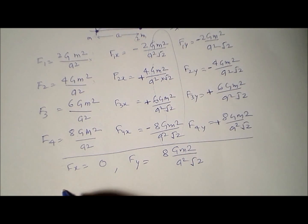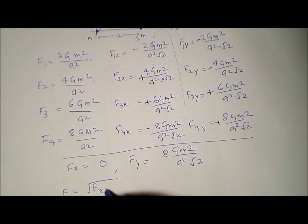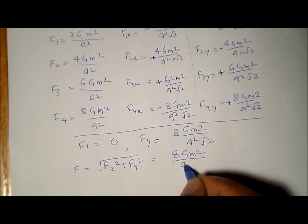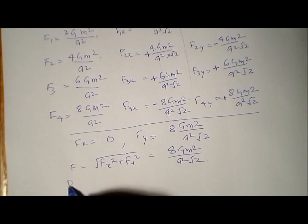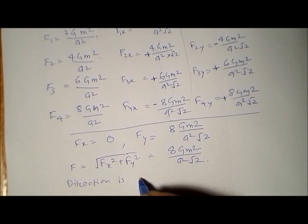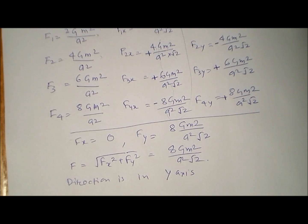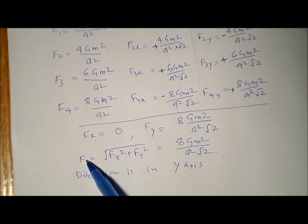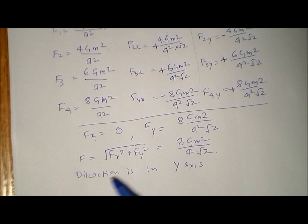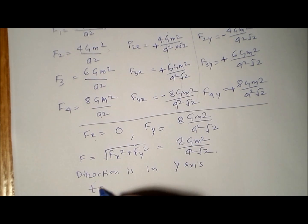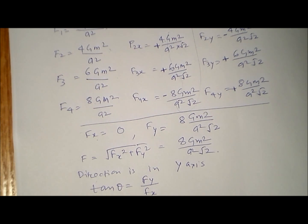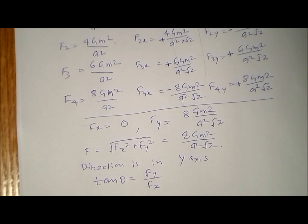The net force is F = √(Fx² + Fy²) = 8Gm²/(a²√2), directed along the y-axis. In general, if a problem has both x and y components, you find not just the magnitude but also the direction using tan θ = Fy/Fx. In this case θ = 90°, but in other problems it may have a specific value.